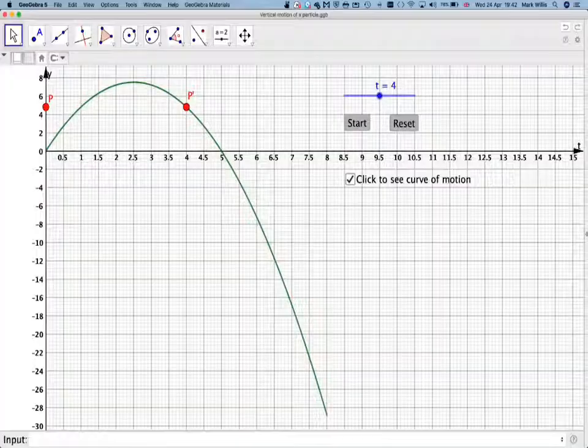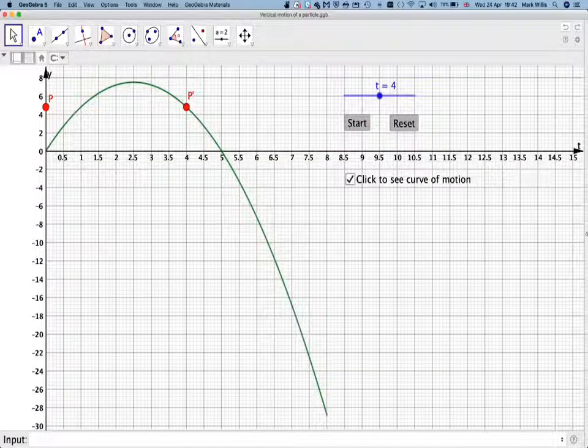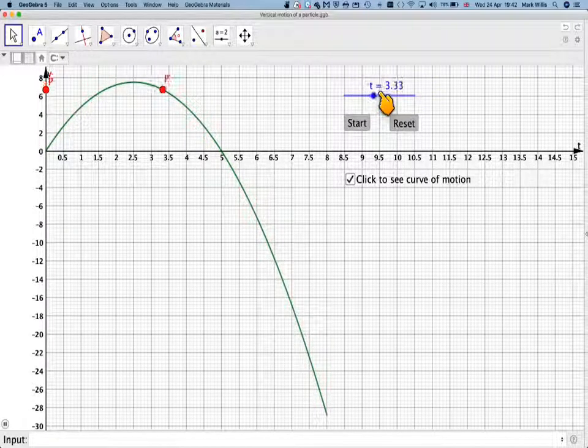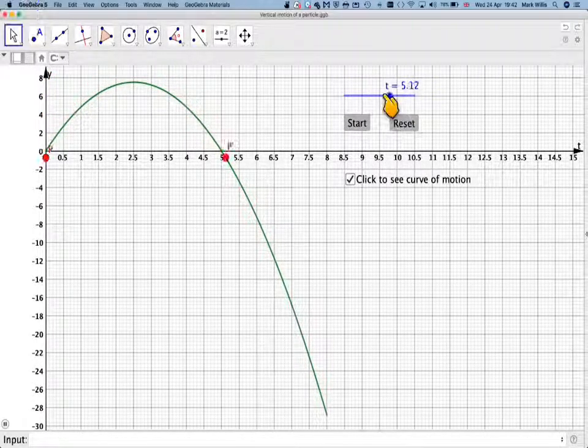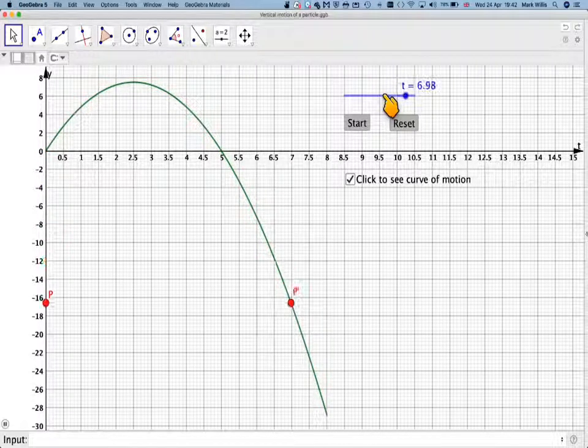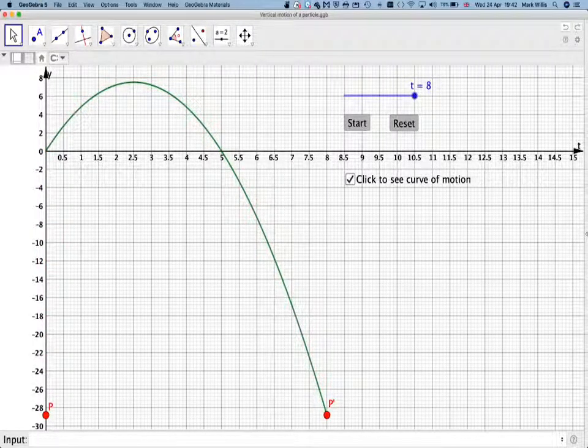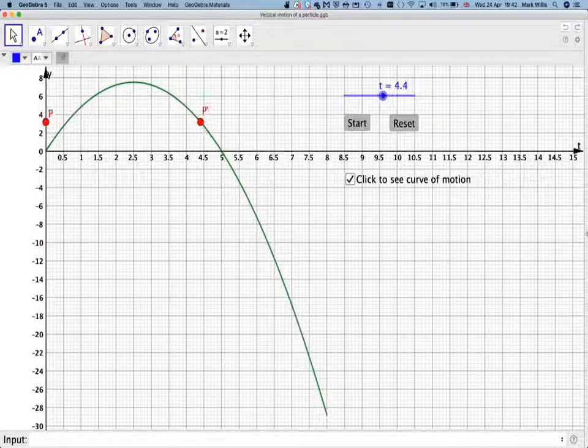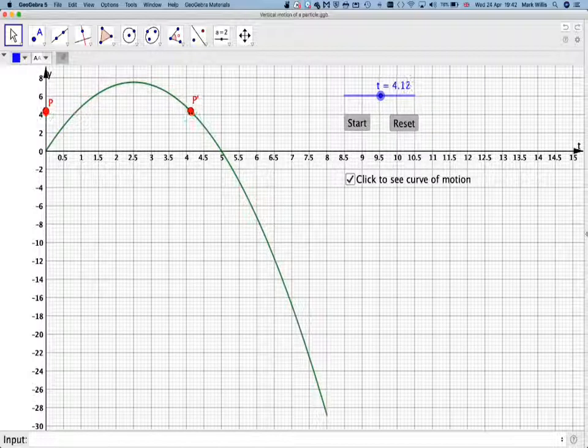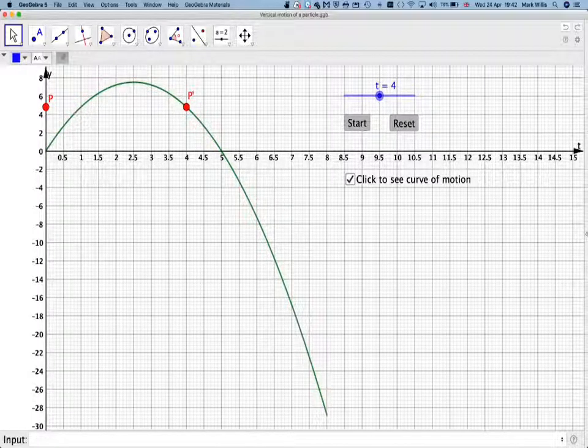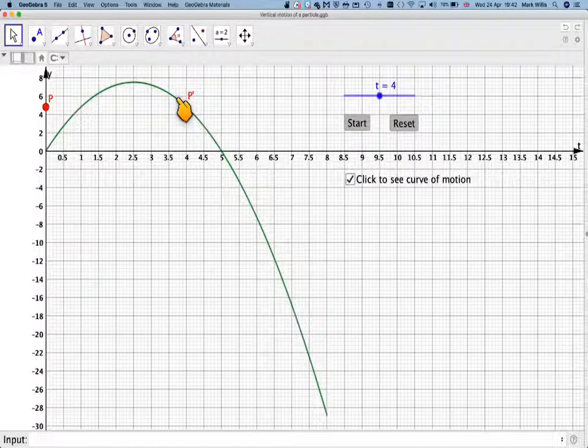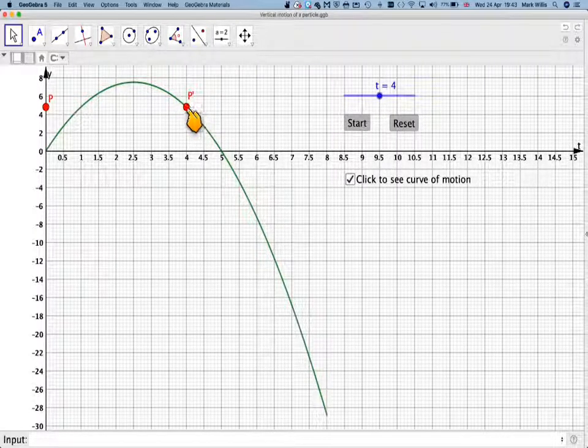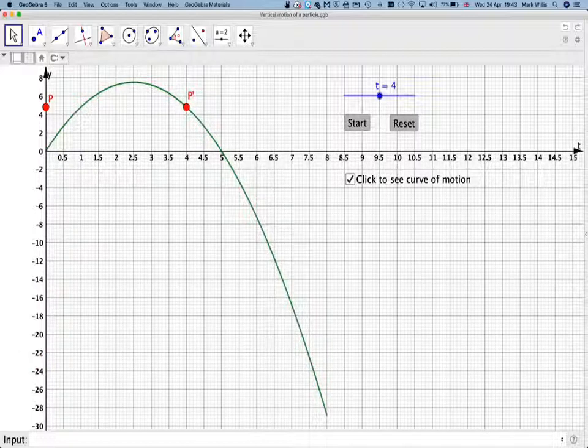If we just go back and look at the GeoGebra app again, trying to relate it all together. If we start it here, we can see that t gets to one point, and now it's starting to move back down. So t is 4, which we just passed, but it was definitely moving towards the southerly direction, and we know that because the velocity has changed. If we look at the tangent when t is 4, it's going to be a negative tangent. So we know that the velocity will be negative, and it's moving back in the southerly direction.